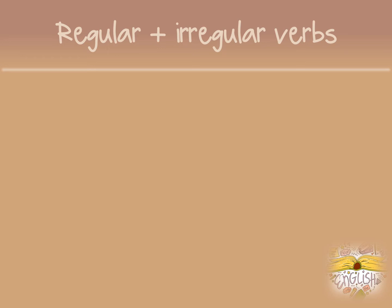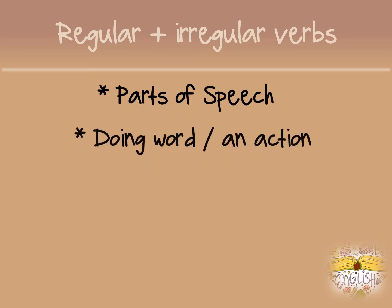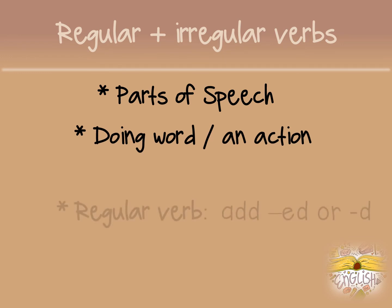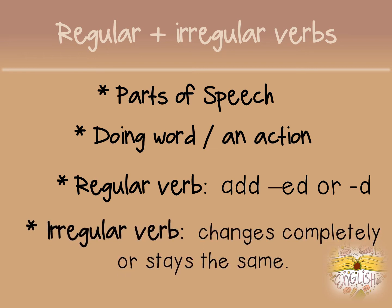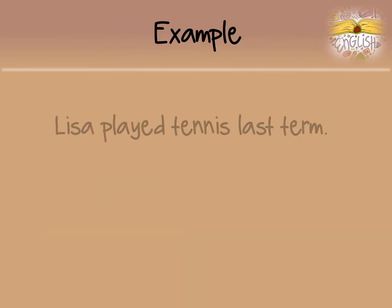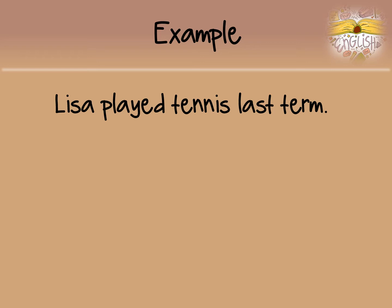Regular and irregular verbs. Verbs are also a part of speech — they are doing words or actions taking place. In the past tense, with regular verbs, you add -ed or -d. For example, 'Lisa played tennis last term' — 'played' is the verb in the past tense. Other examples are words like walked and talked.